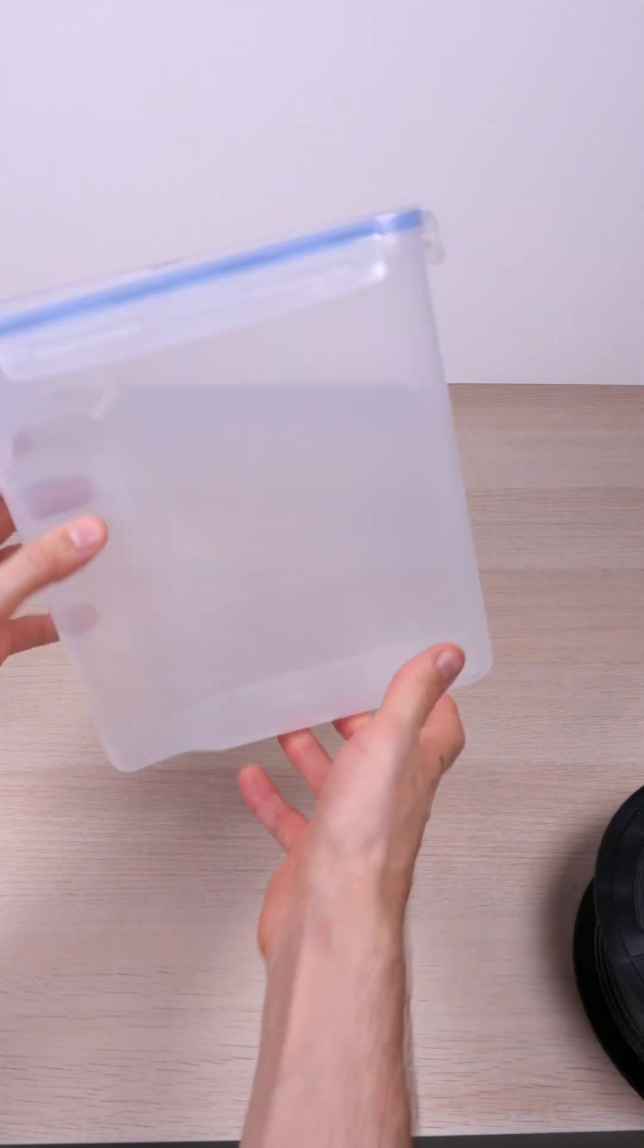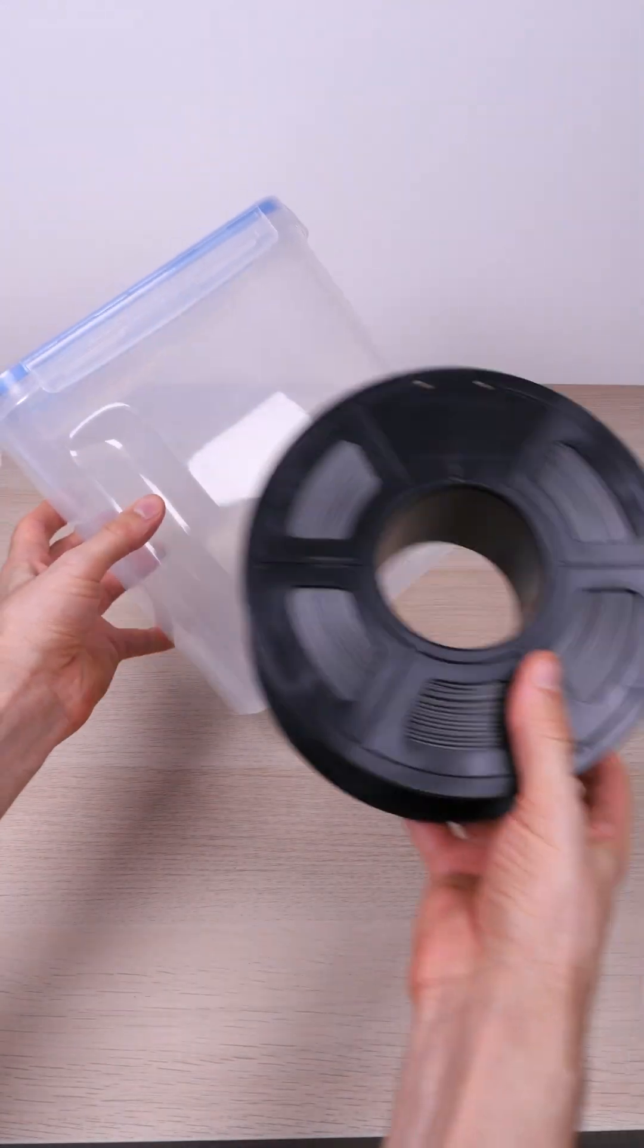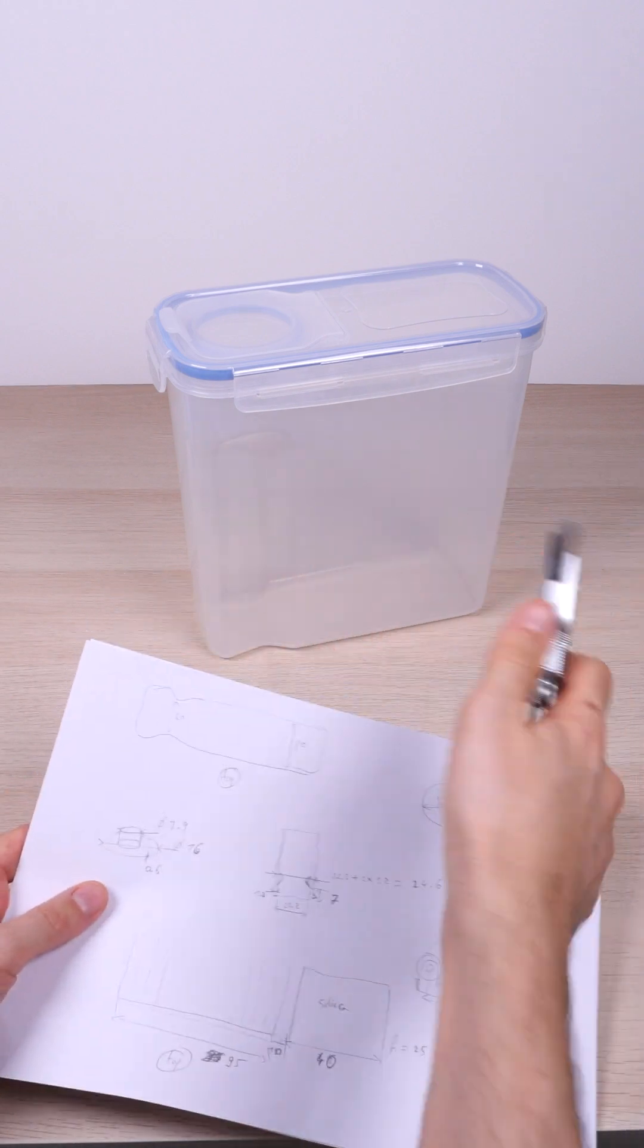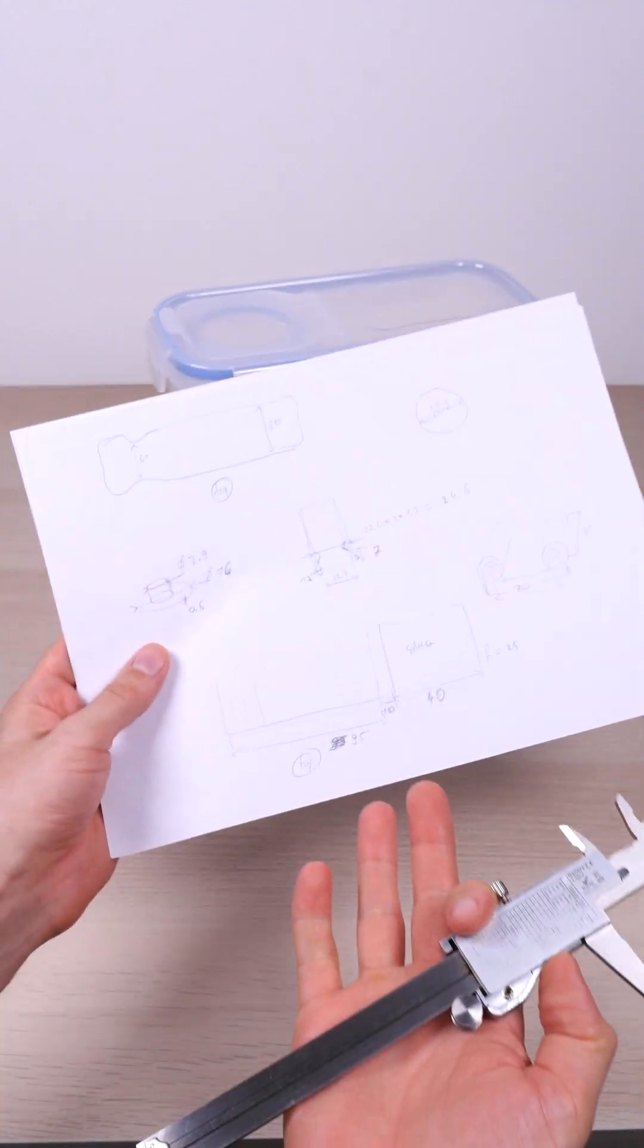In this video I will show you how you can use a cereal box to keep your filament dry. First step is to make some measurements and create a simple sketch up.